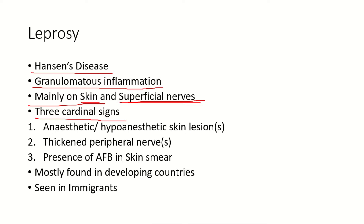There are three cardinal signs of leprosy: first, anesthetic or hypo-anesthetic skin lesions — loss of sensation in the skin due to involvement of peripheral nerves; second, thickened peripheral nerves; and third, presence of acid-fast bacilli on skin smear.